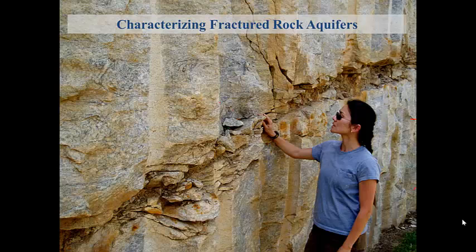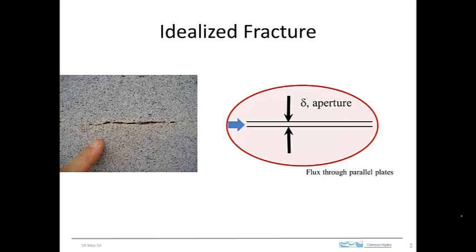Fractured rock aquifers are important worldwide, so it's important to understand the role that fractures play in hydrogeologic processes. Fractures are complicated things. Real fractures have parts that are open and parts that are in contact. But when we think about fractures we typically idealize them as two parallel plates that are held open by a certain gap or aperture. This is the idealized conceptualization of what a fracture looks like.